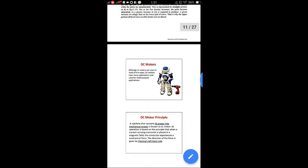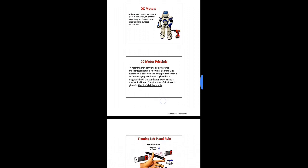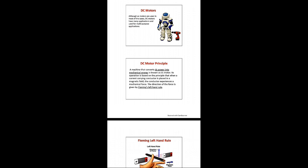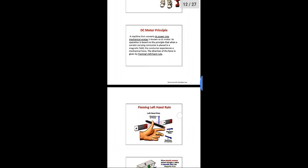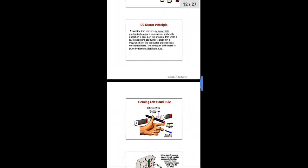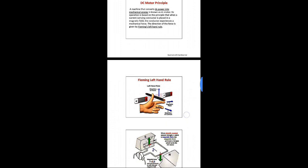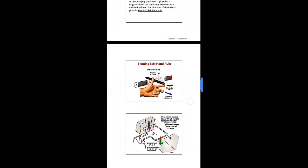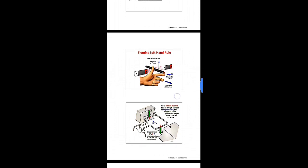The principle of a DC motor is again based on Faraday's laws of electromagnetic induction, but Fleming's left-hand rule is used to find the direction of force. Whenever a current-carrying conductor is placed in a magnetic field, it experiences a mechanical force — that is the principle of the DC motor. DC motors are used in multi-purpose applications: drilling machines, robots, cranes, and excavators. In Fleming's left-hand rule: the thumb indicates the direction of force, the forefinger indicates the magnetic field, and the middle finger indicates the direction of current.